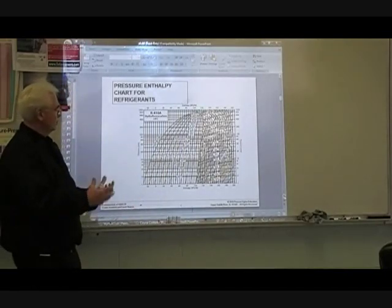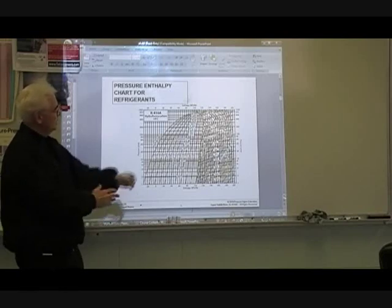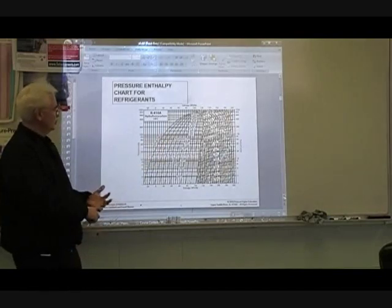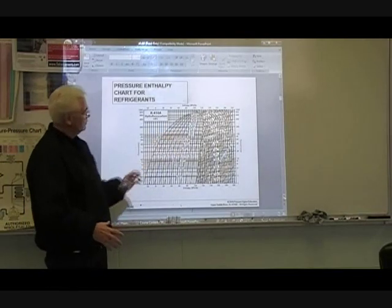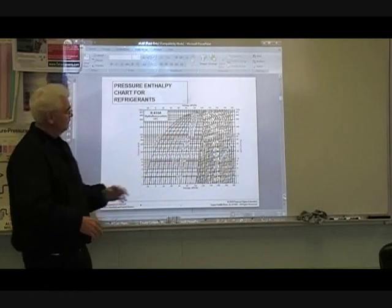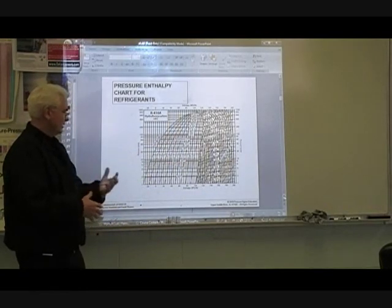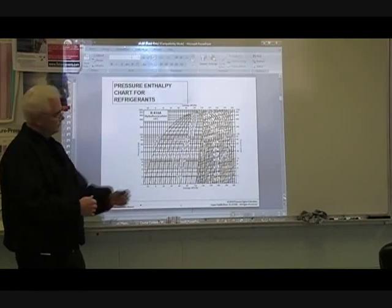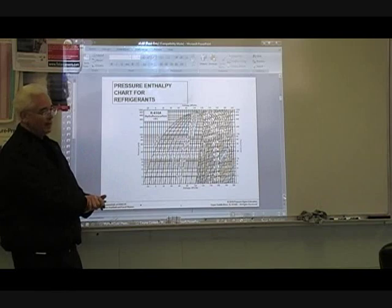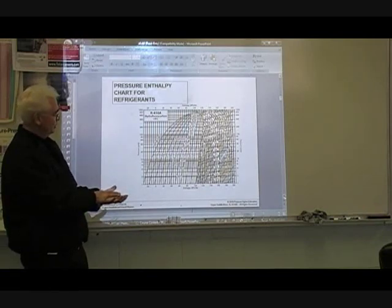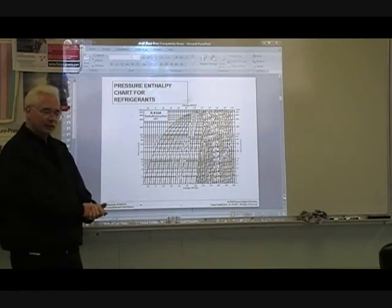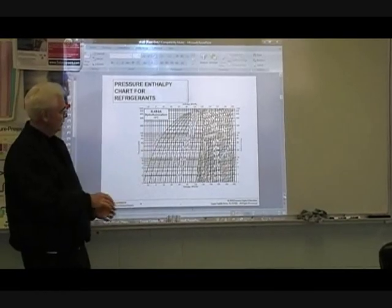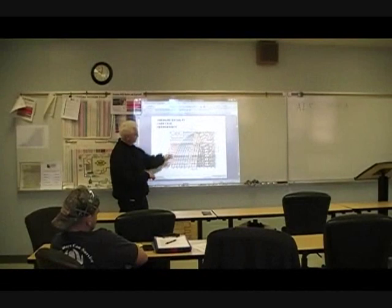That's why we can't calculate volume directly. When you put manifold gauges on a refrigeration system, you're reading pressures and converting pressure to temperature, taking temperature measurements on your suction line and liquid line to calculate superheat and subcooling. You're not measuring volume per se. However, with the pressure-entropy diagram you can look at what's happening volumetrically. As a service technician, you'd probably never use this — the pressure-entropy diagram is used to design refrigeration systems. If you're an engineer designing a system, you'd use it.